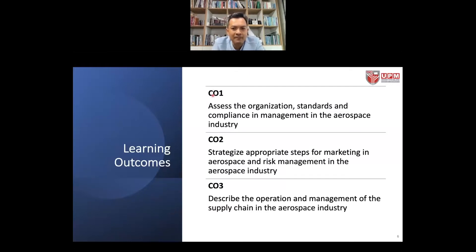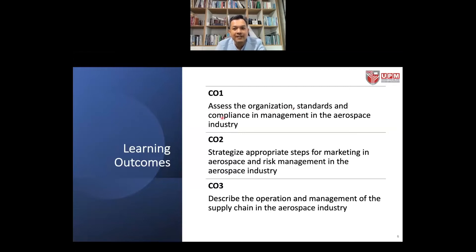In terms of the learning outcomes, there are three main learning outcomes — we call them course outcomes: CO1, CO2, and CO3. Course outcome number 1 is that at the end of this course, you should be able to assess the organization, standards, and compliance in management in the aerospace industry. I will guide you on how to assess standards and compliance for companies in the aerospace industry.